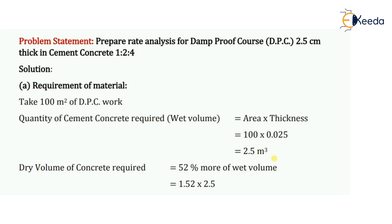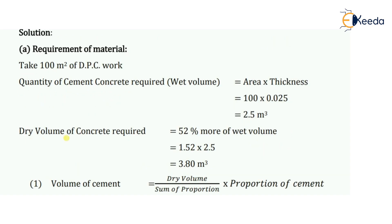Now we have to convert this into the dry volume of concrete required for the DPC work. The dry volume will be 52% more than the wet volume. So multiplying by 1.52: 2.5 × 1.52 = 3.80 cubic meters. This is the dry volume of concrete.